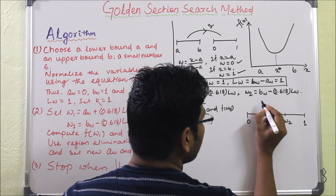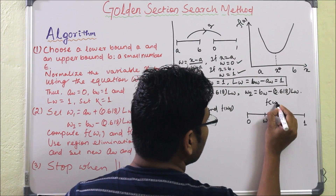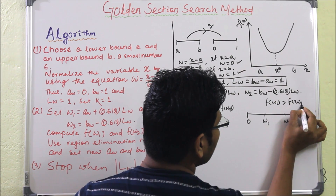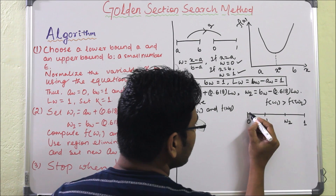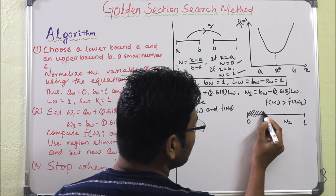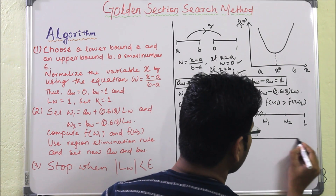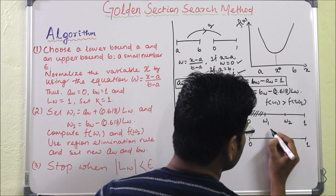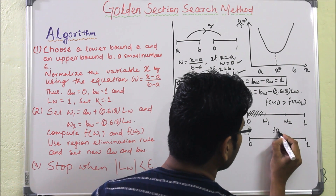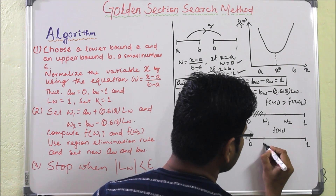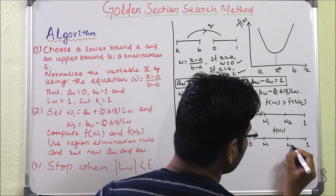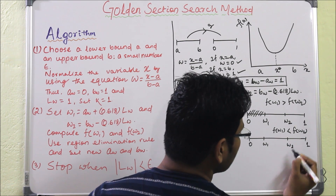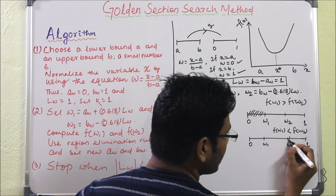We compute f(w1) and f(w2), then compare them. If f(w1) is greater than f(w2), the left portion is eliminated. If f(w1) is less than f(w2), the right portion is eliminated.